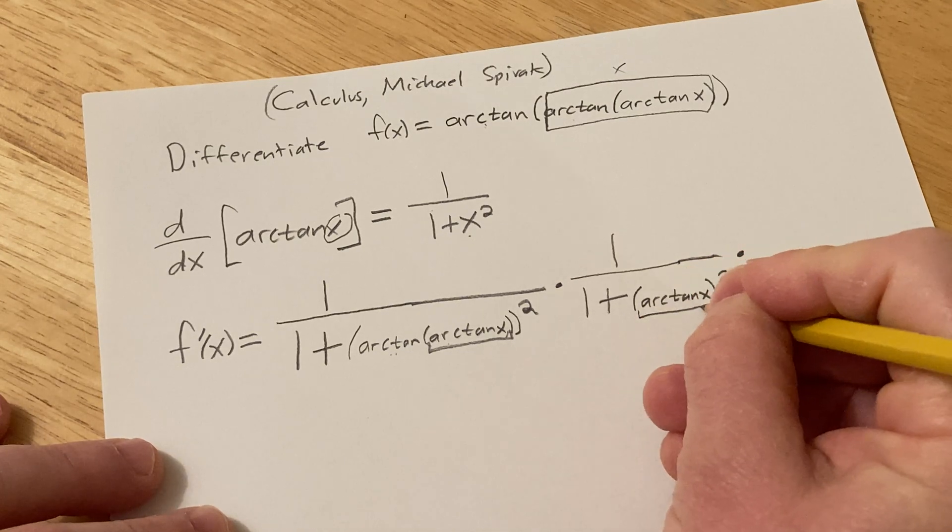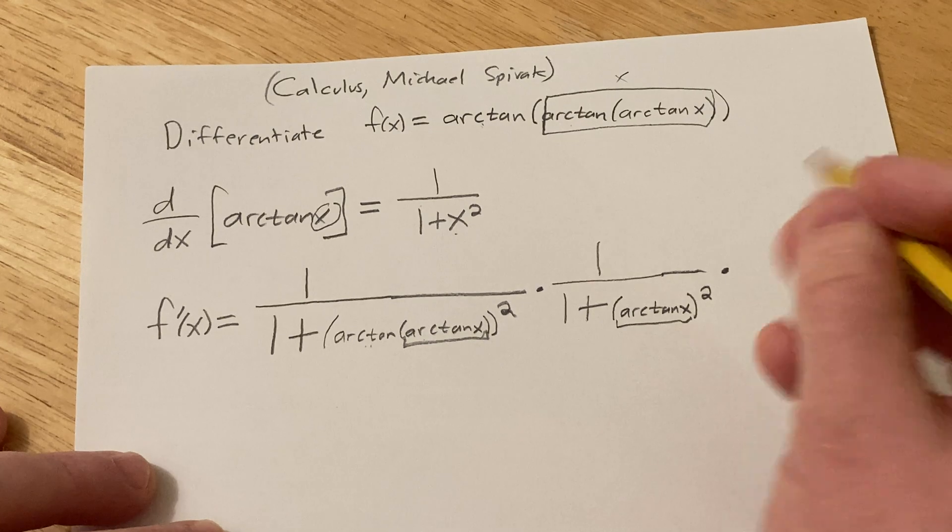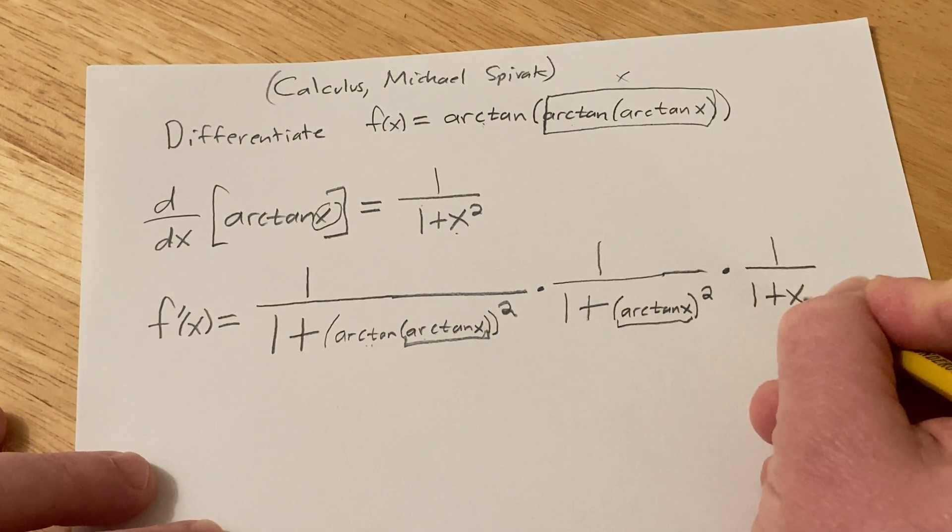Again, the derivative of the inside. And the derivative of arctangent is 1 over 1 plus x squared.